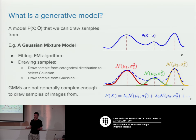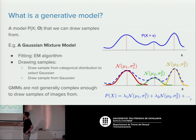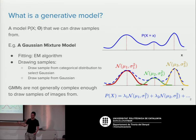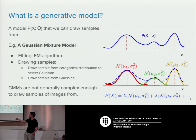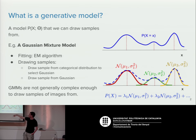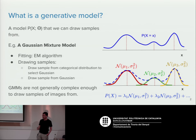Why is this a generative model? Because it's easy to generate samples from it. If you want to sample from a mixture of Gaussians, you first sample from the categorical distribution, which has parameters saying how likely a sample is to come from each category. That picks the Gaussian you're in, and then you just sample from the corresponding Gaussian — giving you samples from the top distribution. It's a generative model because we can generate as many samples as we want from it.